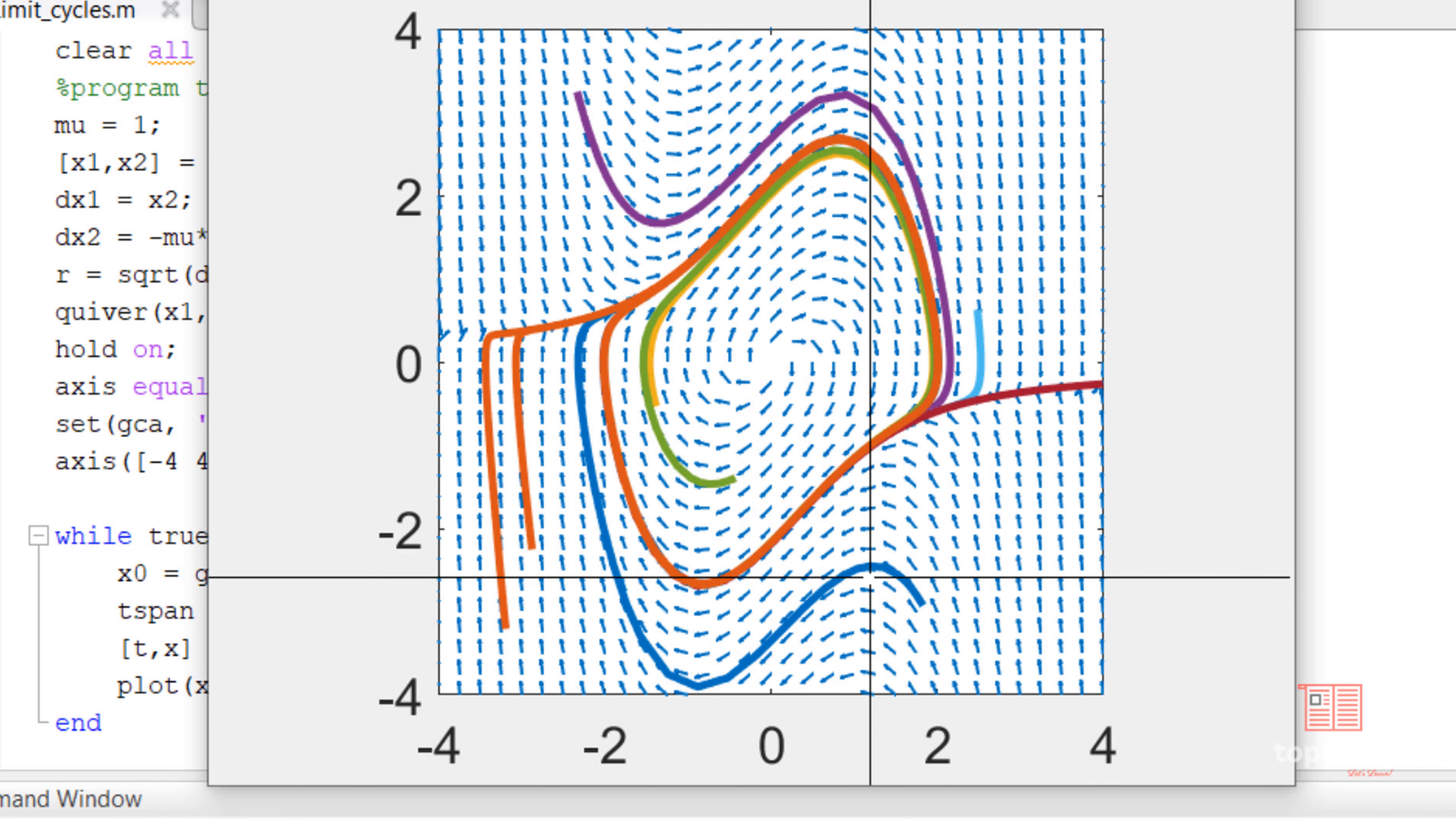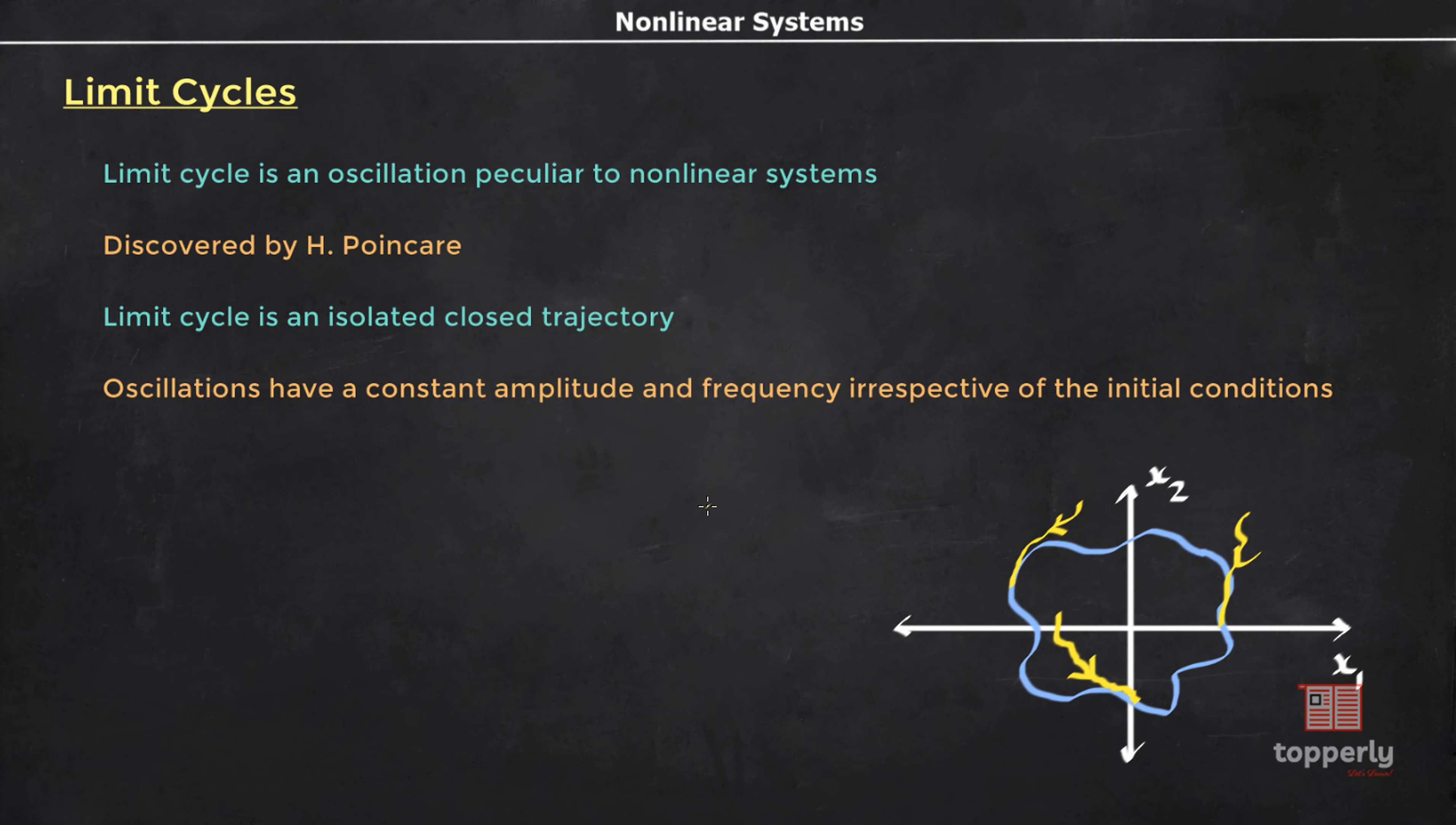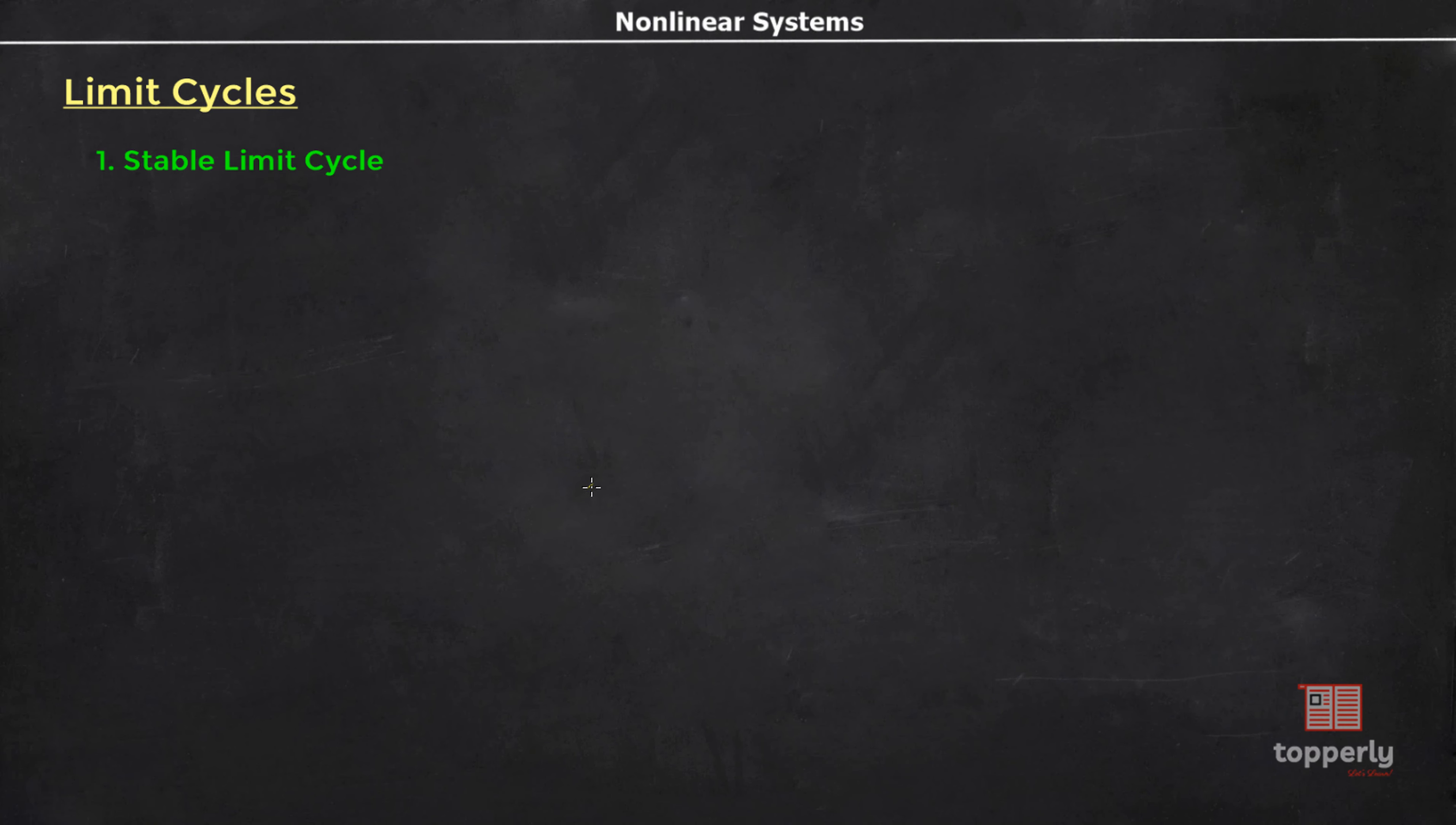Mathematically speaking, a limit cycle is a closed trajectory in phase space having the property that at least one other trajectory spirals into it as time approaches infinity. In a phase plane, a limit cycle can be easily recognized as an isolated closed path. This also means that its neighboring trajectories are not closed. These trajectories should either spiral towards or away from the limit cycle, and based on this, we can categorize the limit cycle into three classes.